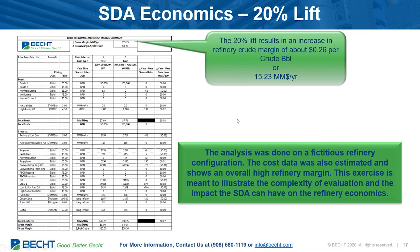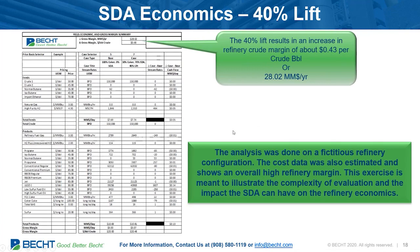On the 40% lift, we almost see a doubling of the benefit. We saw an increase to 43 cents per barrel of crude on the margin, with a yearly increase of $28 million per year. Again, these economics are influenced by the assumptions on crude pricing and product pricing, as well as the fictitious configuration of the coker and all the downstream equipment. Only the coker was fully constrained or operating at its limit to start with.